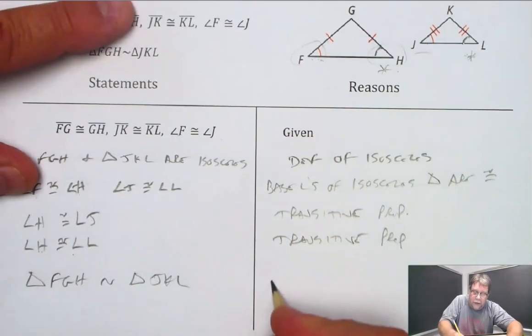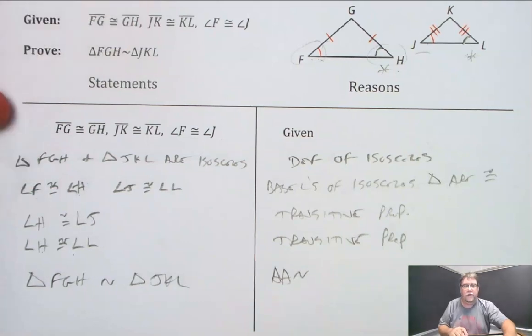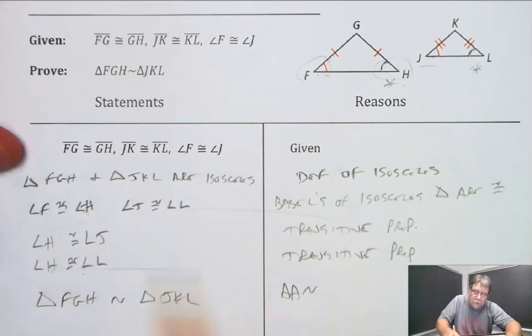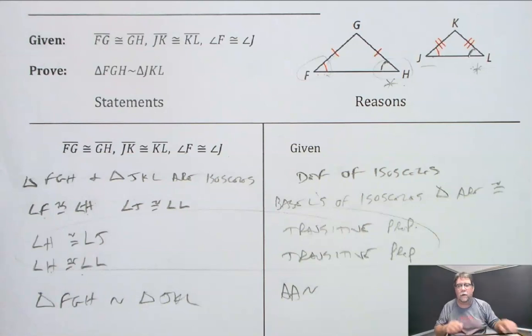And the reason would be the AA similarity postulate. You've got to think your way through this part of the proof because that's not quite intuitive. But work your way through it. Rewatch the video if you need to to get that clear in your mind.